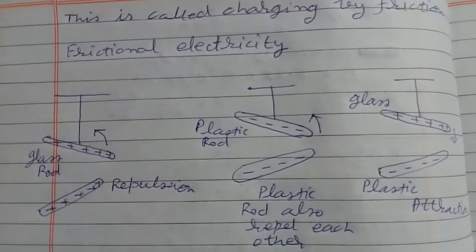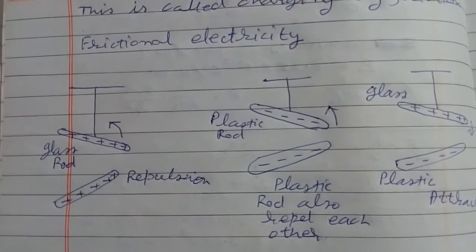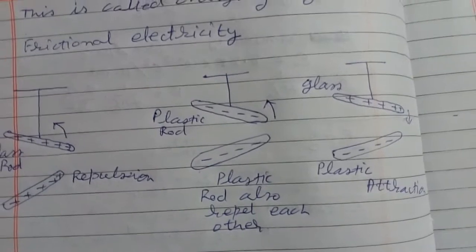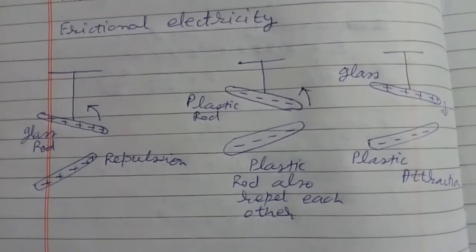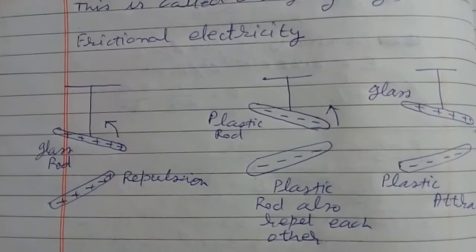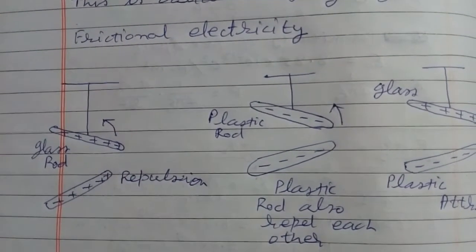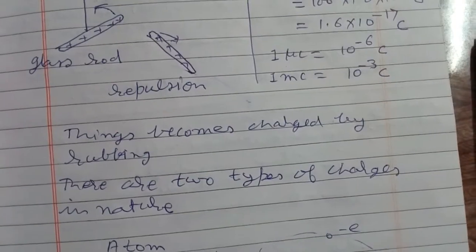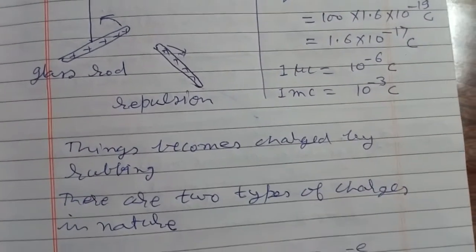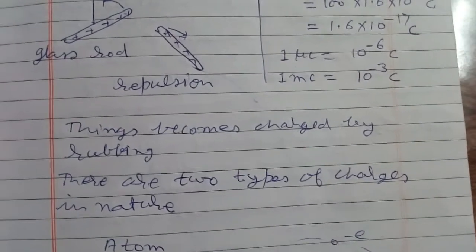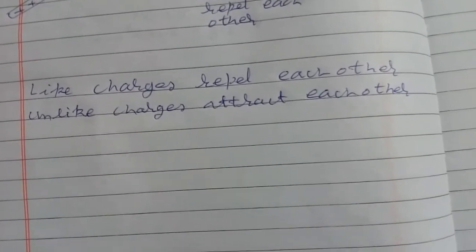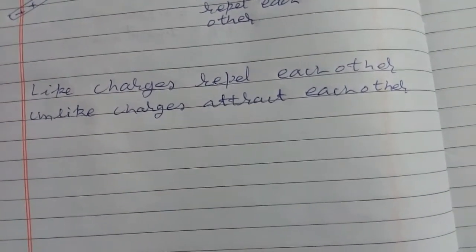This experiment shows that there are two types of charges. Charge acquired by glass rod is positive, and charge acquired by plastic is negative. The name was given by Benjamin Franklin. So things become charged by rubbing, and there are two types of charges in nature. Like charges repel each other, and unlike charges attract each other.